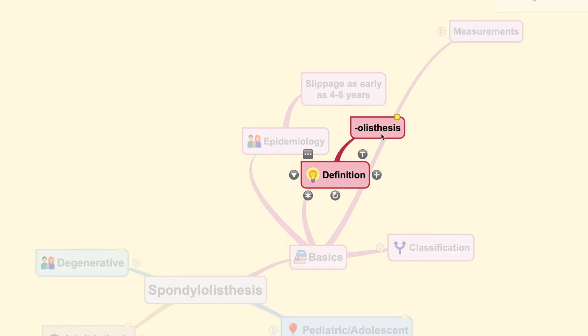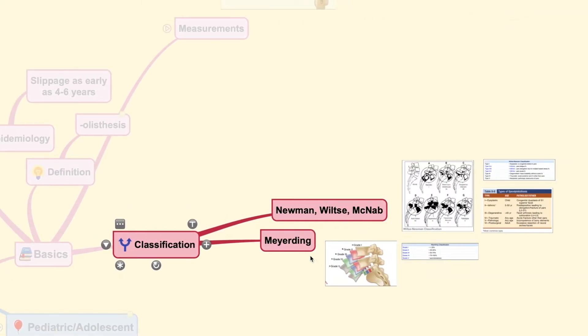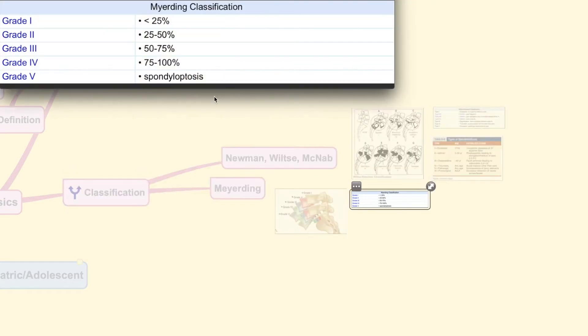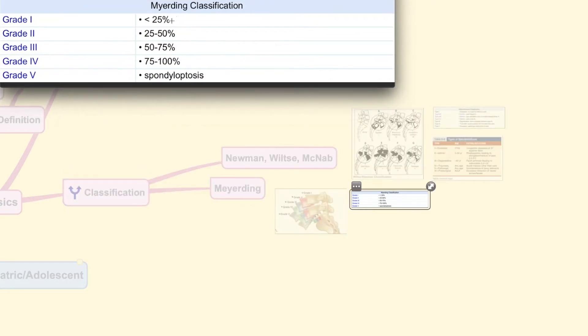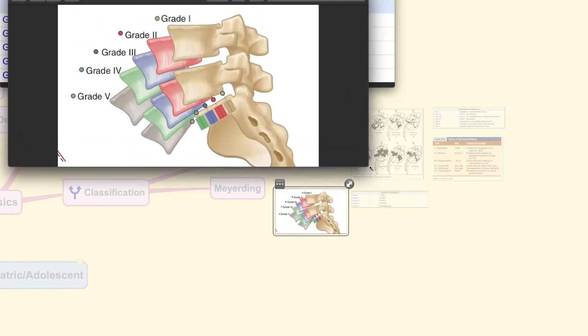Spondylolisthesis itself comes from the suffix of O-listesis, which is the forward slippage of one vertebrae on another. Basically, this condition could be classified using these two types, which is the Mayer-Ding classification that grades the listesis based on the percentage of the slippage, starting from 25, under 25 to over 100% in grade 5 listesis or otherwise also known as spondyloptosis. And these are the pictures depicting how much the slippage has occurred.